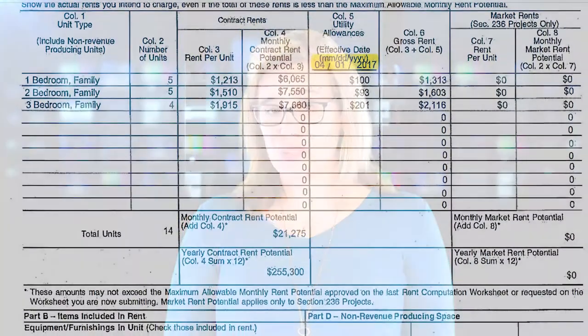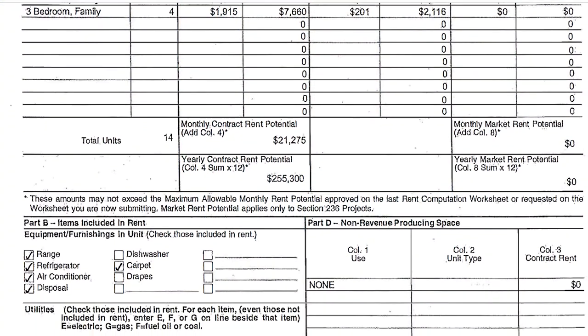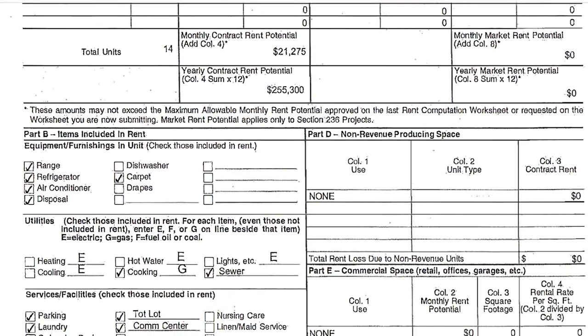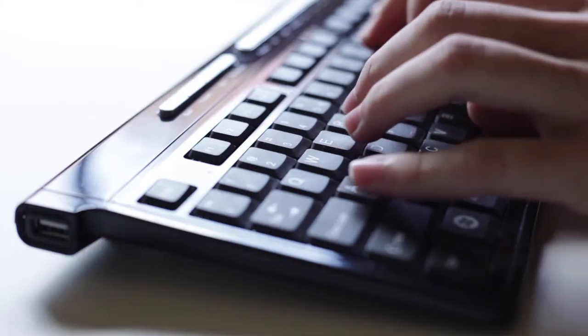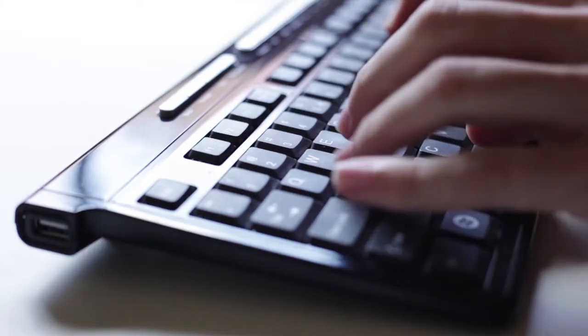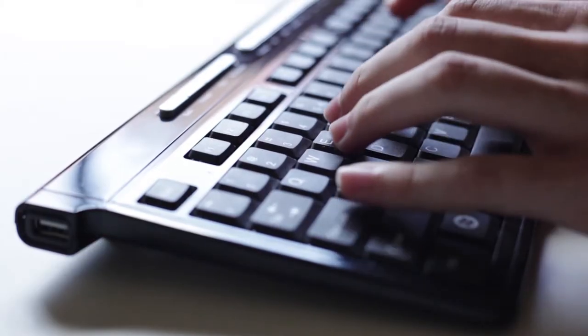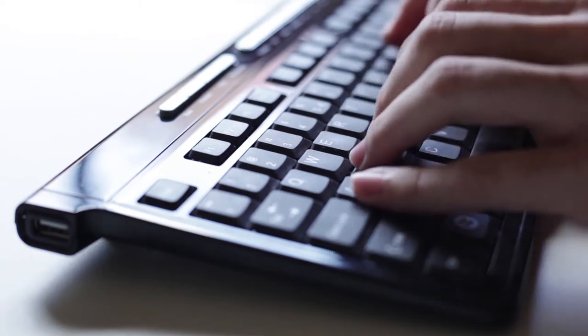Failing to enter the rents correctly under the appropriate effective date will cause errors on every certification we receive and will require us to reject your voucher and request corrections. When you make an error entering the date, it affects every certification in your system. You will need to correct every certification that has the wrong rent in order to make it work. This is a lot of work and usually requires you having to call your software provider.